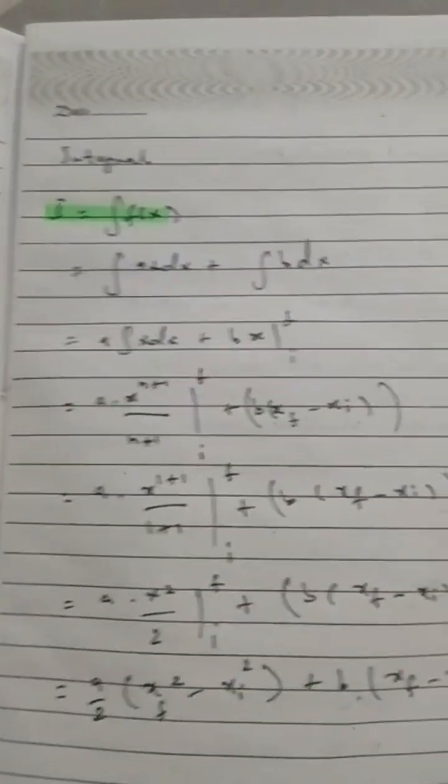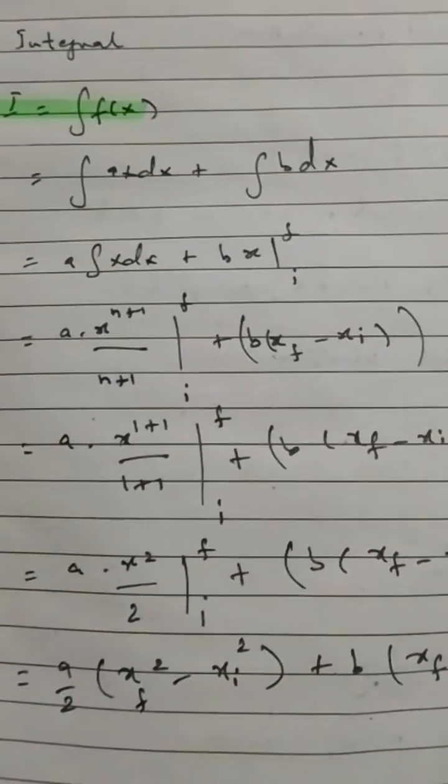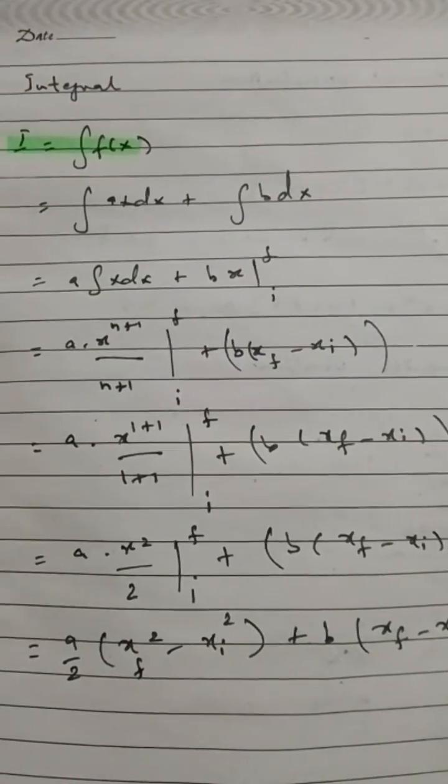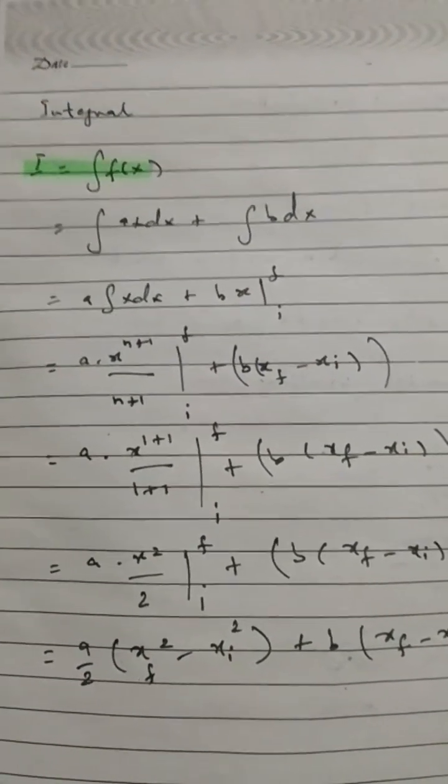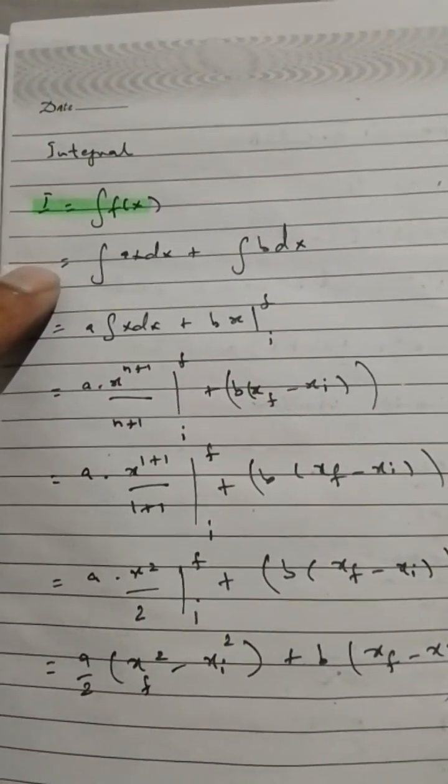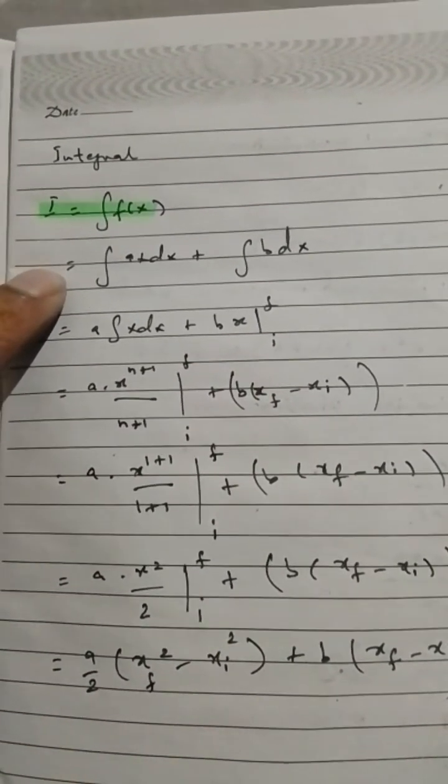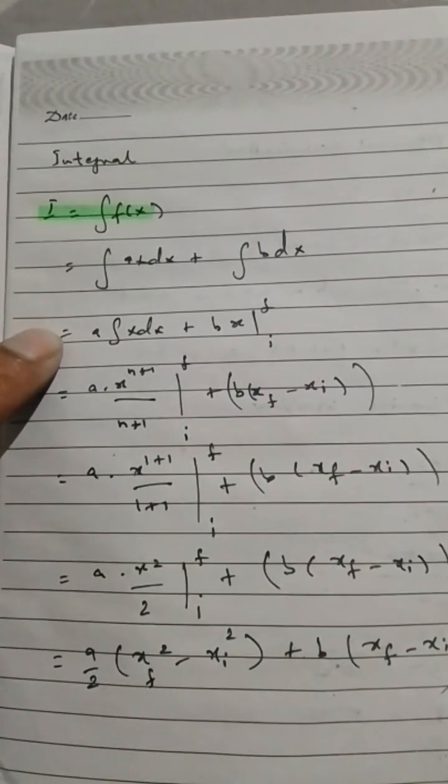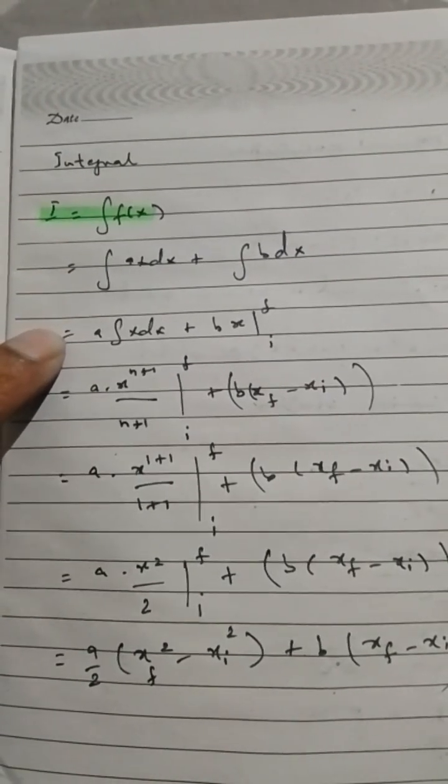Then this is the integral or the anti-derivative. We have time to just touch the basics. For the same polynomial, the function ax + b, we integrate them: a comes out, x dx.